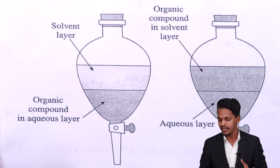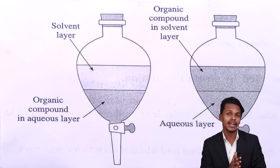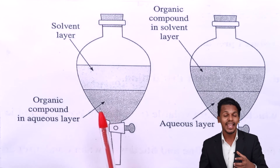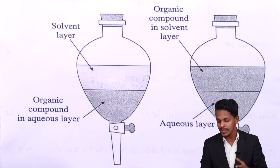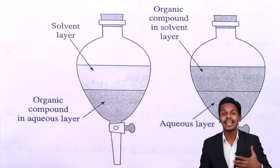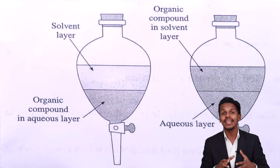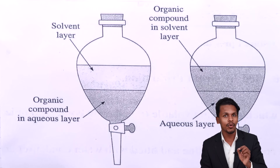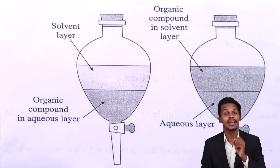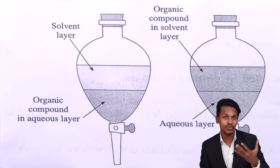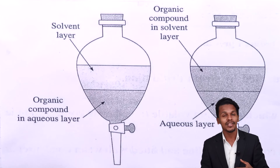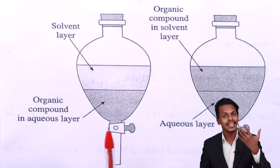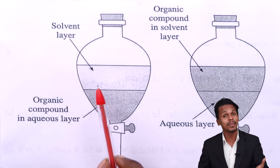What we have to do is shake the separatory funnel vigorously. In that moment, the organic solvent captures the organic compound that was present in the aqueous solution. Most of the organic compound that was dissolved in the aqueous layer is now captured in the organic solvent. It should be noted that while the compound may be soluble in both layers, it must be significantly more soluble in the organic solvent than in the aqueous solution, so that the maximum amount can be extracted.